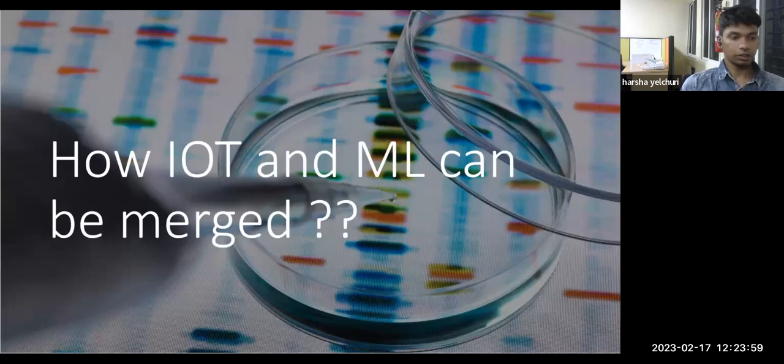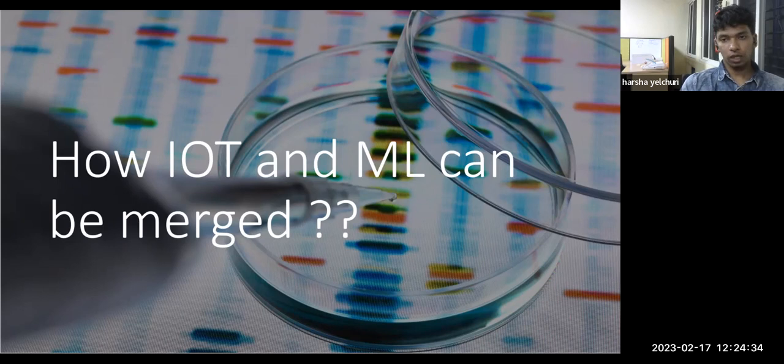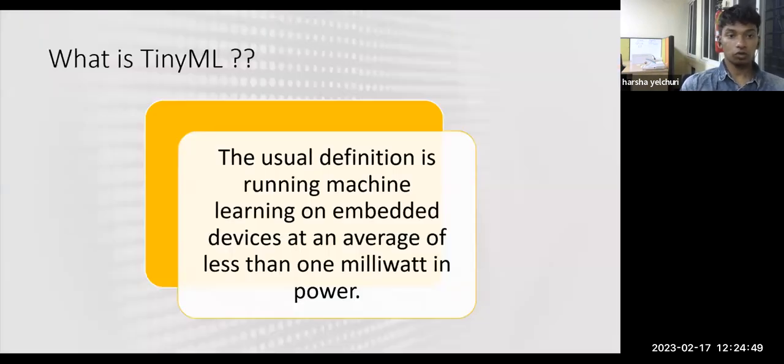How can IoT and ML be merged? The user may want different light intensities during different times based on the worksheet. Can you make a system that works more intelligently pertaining to the needs of the user? We can use some ML algorithm to learn what the user wants. But if the algorithm is running somewhere in the cloud, we need to transfer the data to the cloud and then inference it there. There's a real-time delay and privacy issues. What if we can make intelligent decisions in real-time while keeping the data local to the system? That is what TinyML is.